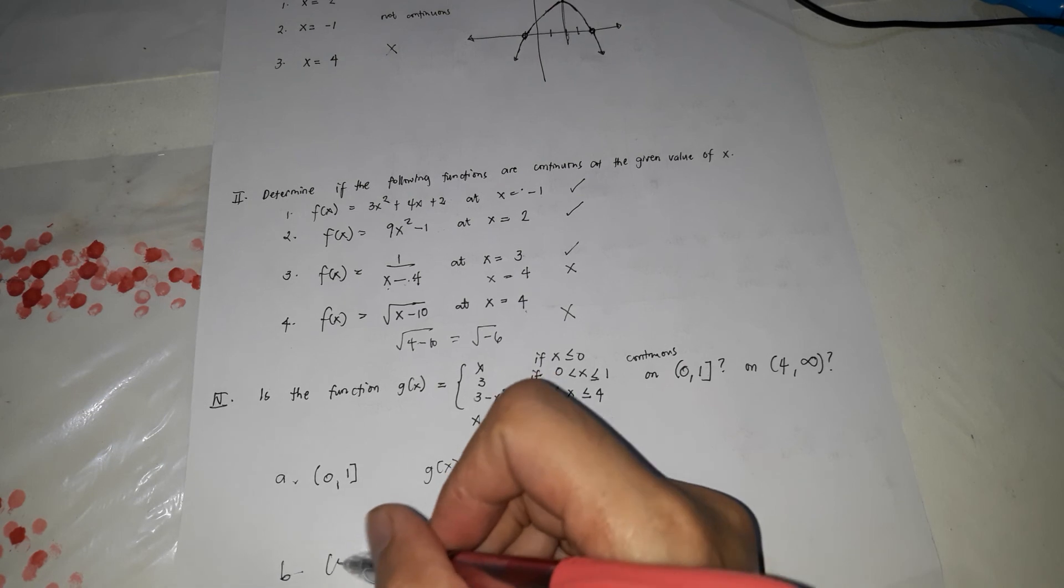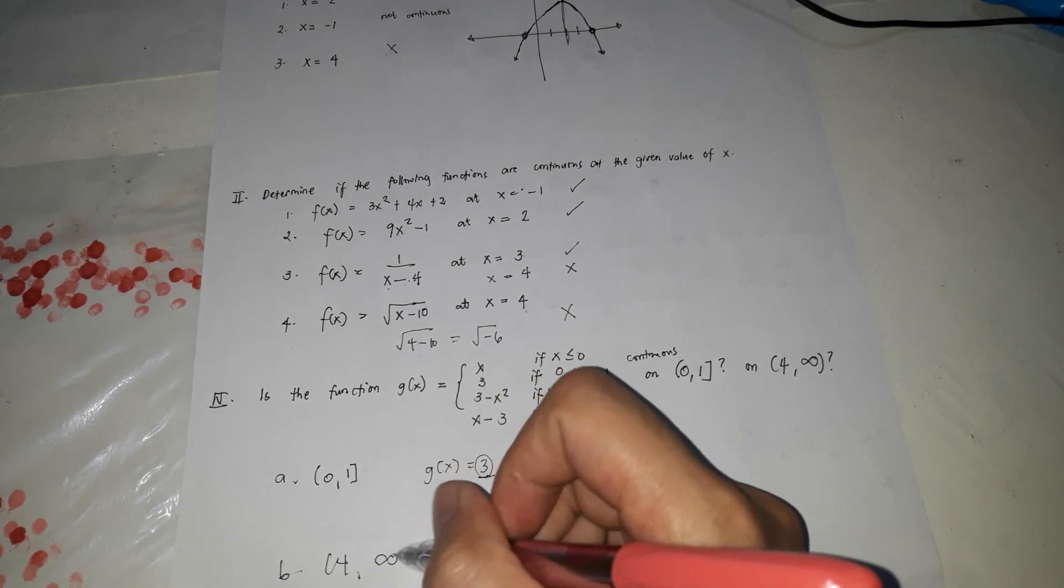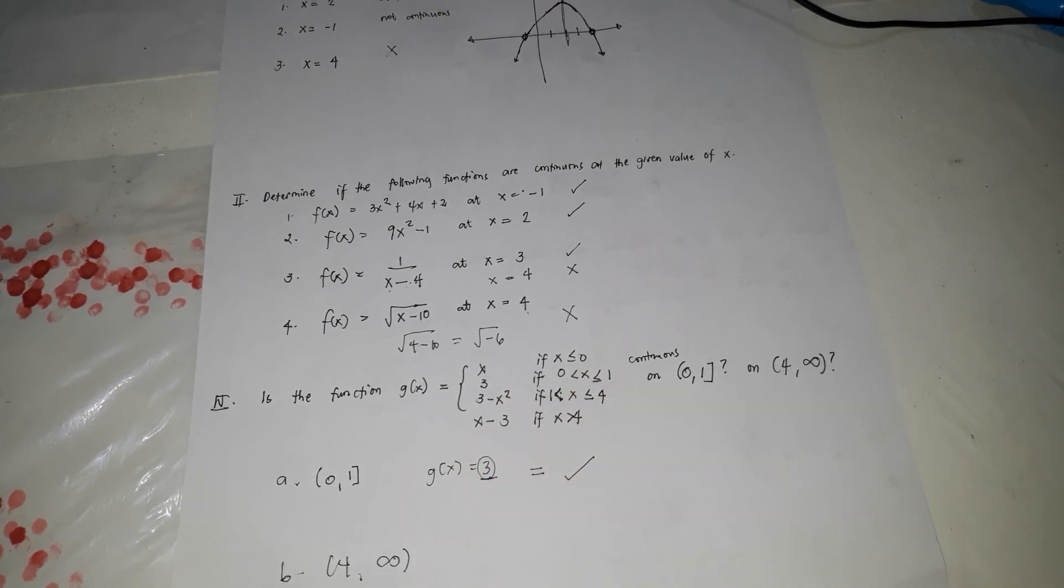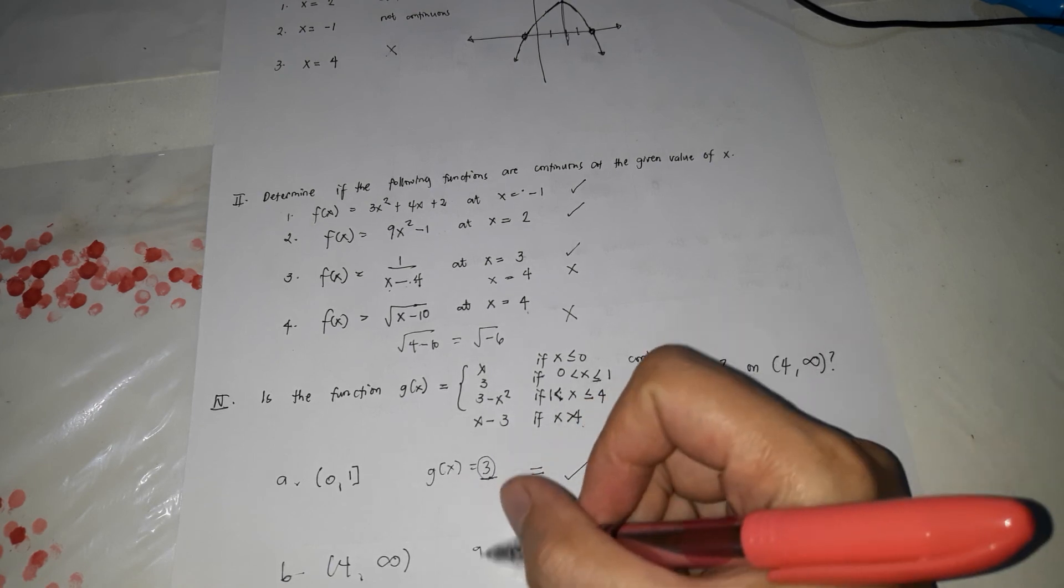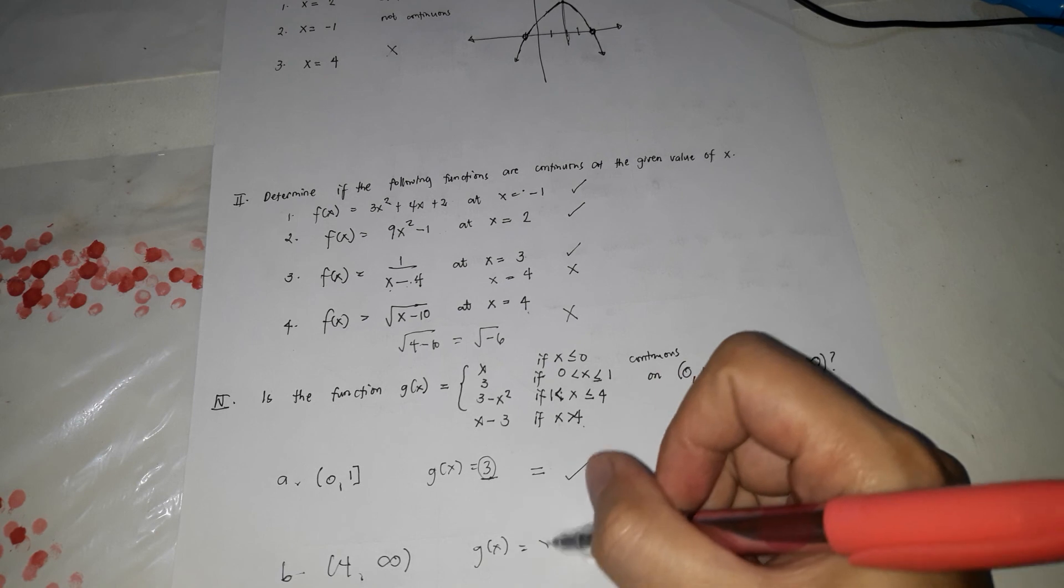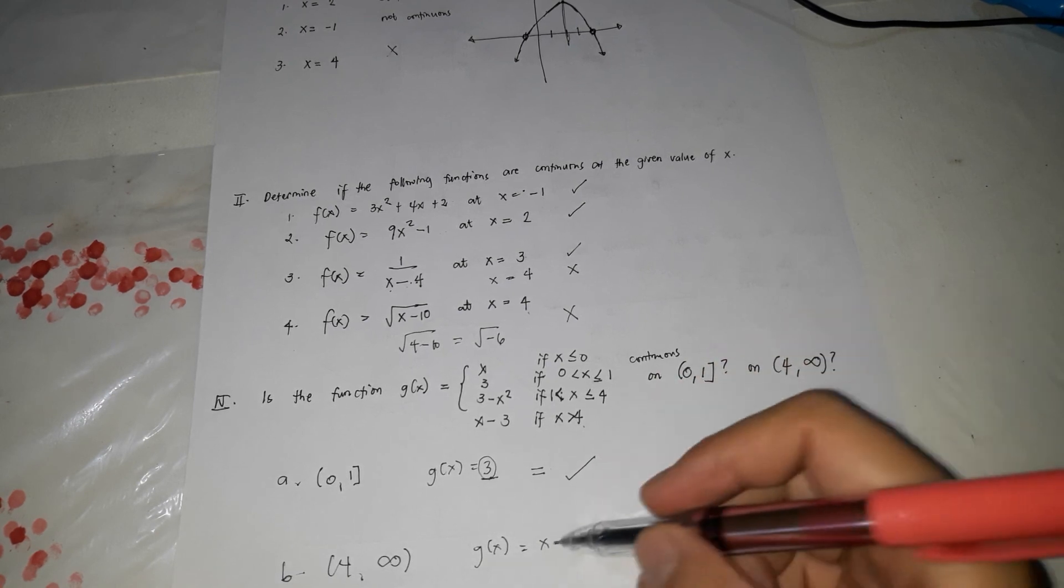letter B is 4 and positive infinity, 4 and positive infinity. As you can see, 4 to positive infinity is nandito siya. So, x is greater than 4. So, ibig sabihin, it's 4, mas malaki sa 4 until positive infinity. So, the function is g of x is equals to x minus 3.